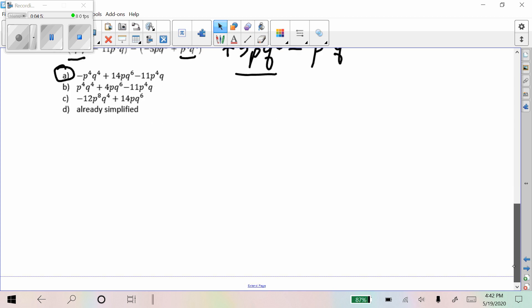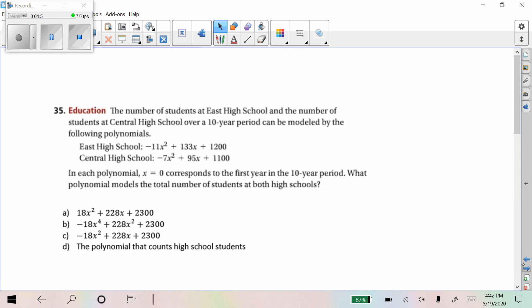And then the last one we're going to do is on the last page here. We want to just add these two together. So adding these two together, we're going to get negative 18 X squared. Adding the 133 and the 95 gives us 228 X. And then adding these two gives us 2300. So that would be answer C.